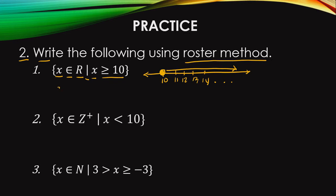So in writing the roster notation, we write x equals, then the brace: 10, 11, 12, and a comma followed by three dots — the ellipsis — because it continues so on and so forth, forever. There is no limitation.